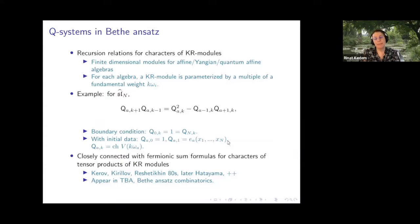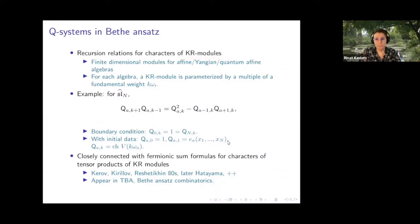Q systems appear in the Bethe Ansatz solution of the generalized Heisenberg spin chain — that's where they first appeared. You can view them as recursion relations for a special set of characters of finite dimensional modules now called Kirillov-Reshetikhin modules, or KR modules. KR modules can be viewed as finite dimensional representations of some infinite dimensional algebra — for example, the Yangian, quantum affine algebras, or current algebras in the formulation of Chari and Moura.